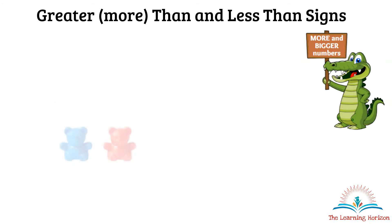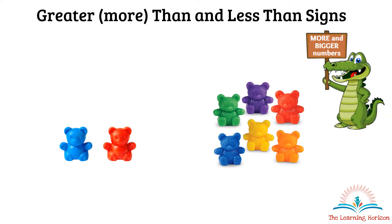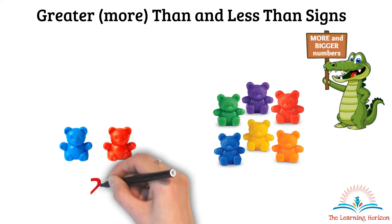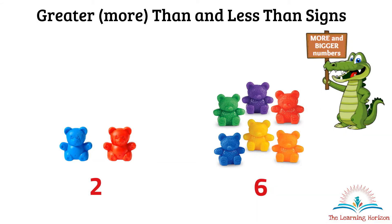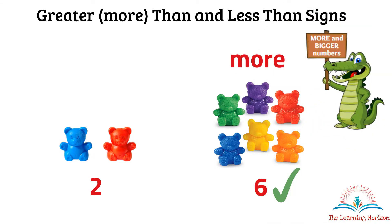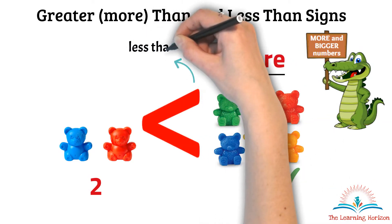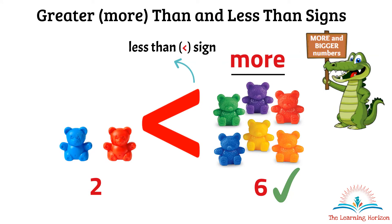Let us look at another example. We have a few bears. Here we have 2 and here we have 6. So where do we have more? It is here — that is 6 bears. So again the hungry alligator will eat these bears because they are more. The sign shown is the less than sign. We can also say 2 is less than 6.